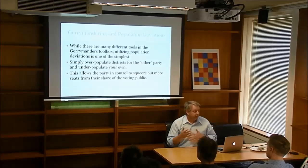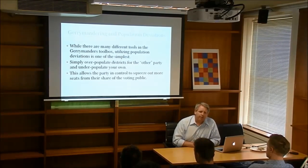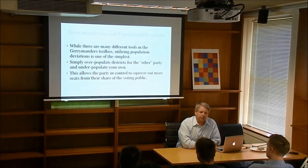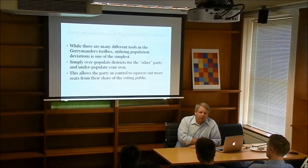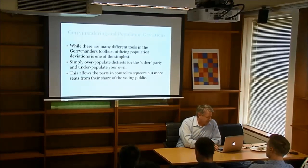The reason population deviations are problematic is that it's a very simple tool to use to gerrymander the state. You overpopulate the opponent's districts and underpopulate your own, which allows you to gain an extra seat or two statewide, depending on how many seats are in the state legislature — and those vary widely among states. One of the smallest states, New Hampshire, has a state legislature that's the third largest in the Western world by total number of seats, just behind the British House of Commons and the U.S. House of Representatives.